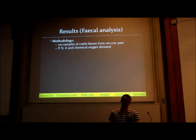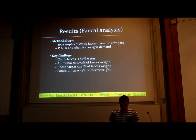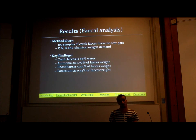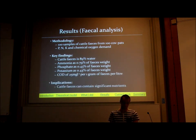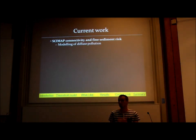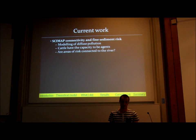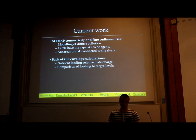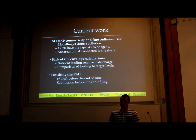The fecal analysis: we looked at nitrogen, phosphate, potassium, and other nutrients. We found that cattle faeces is mostly water, which is important in terms of the mobilisation of that faeces and its potential to get into rivers. Cattle faeces essentially contain significant nutrients. Current work is trying to bring all of this together in a model to map fine sediment risk and assess how all those factors interact. We've also done back-of-the-envelope calculations looking at nutrient loading and discharge. The target is a first draft by the end of June and submission before the end of July, finishing the PhD.